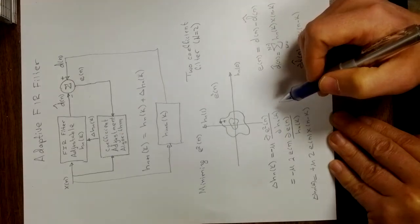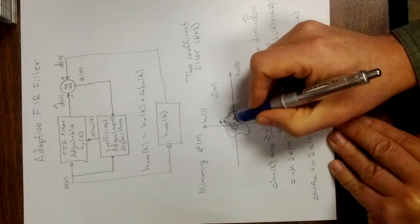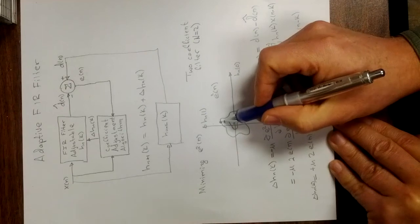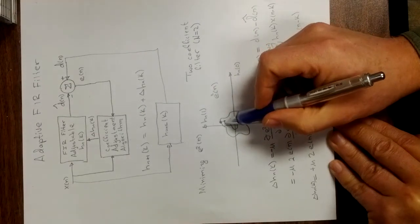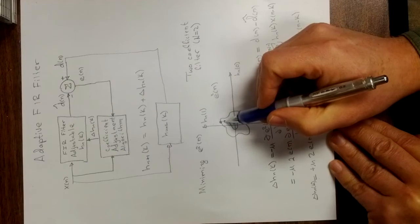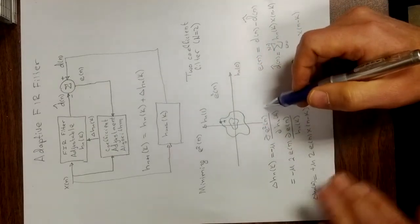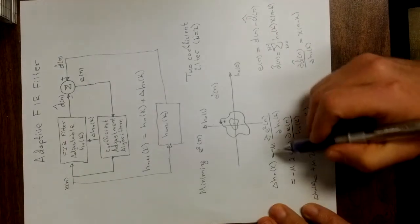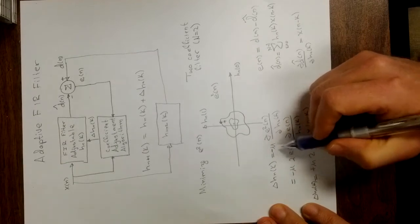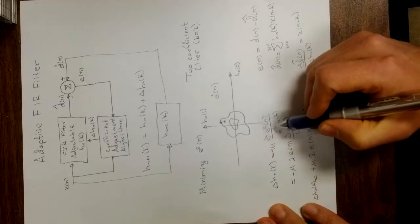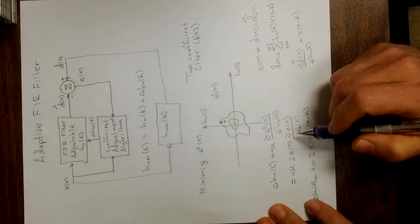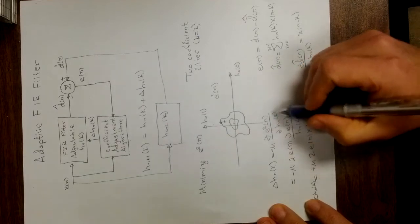So what that means is we'd like to make the change in delta h sub n of 1 and delta h sub n of 0 proportional to the derivative here. You can see in this case delta h sub n of 1 needs to be somewhat negative, pretty big, and delta h sub n of 0 needs to be positive just a little bit. So how do we get that mathematically? We could say delta h sub n of k is negative, because I want to go in negative the gradient direction. I'm going to put a mu in here. The mu is my adjustable step size. And then I'm going to just write the derivative of e sub n squared with respect to h sub n of k. And so then the question becomes, what is e squared of n and how does it depend on h sub n of k?